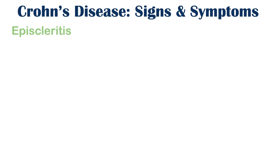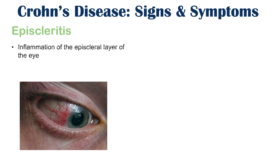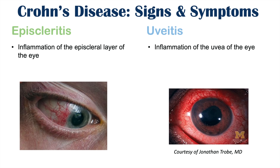There are important ocular findings in Crohn's disease patients. Episcleritis — inflammation of the episcleral layer of the eye — is one such finding. Uveitis — inflammation of the uvea of the eye — can also be found. Both of these can present with red eye and, in some cases, difficulty with vision.